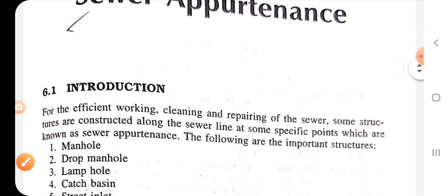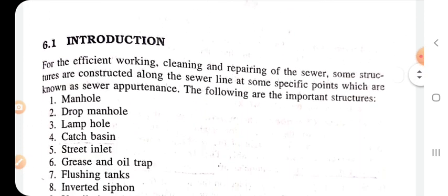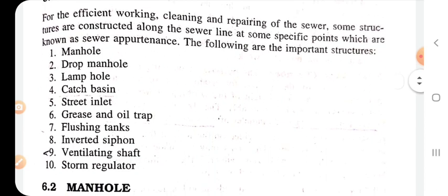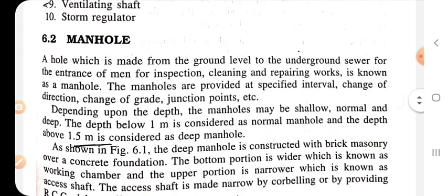Sewer apparatus: introduction. For the efficient work in cleaning and repairing of the sewer, some structures and constructions along the sewer line at specific points are known as sewer apparatus. The important structures are: manhole, drop manhole, lamp hole, catch basin, street inlet, grids and weir, flushing tank, inverted siphon, ventilating shaft, and storm regulator.